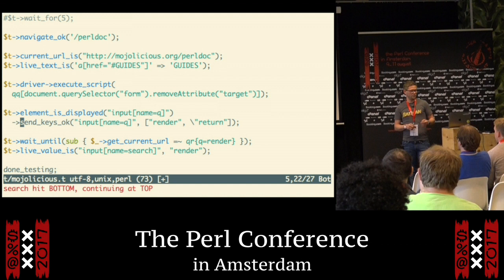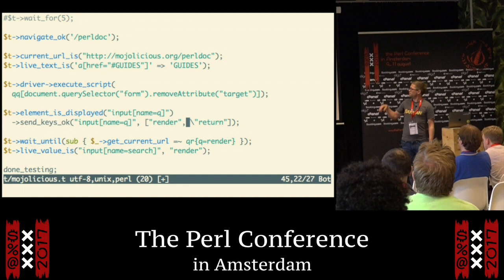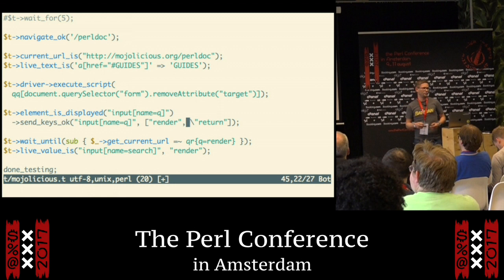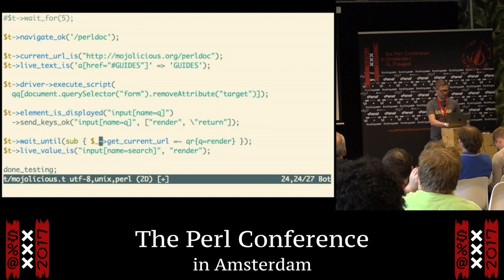We're going to send some keys — like pressing the keyboard — into an input. Here we're typing the string 'render'. Afterwards we're hitting return. Everything that has a reference with a slash in front is going to be a control character instead of actual keys. So this will simulate pressing 'render' and then hitting return on the keyboard.